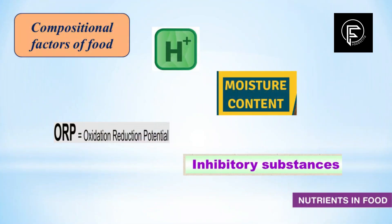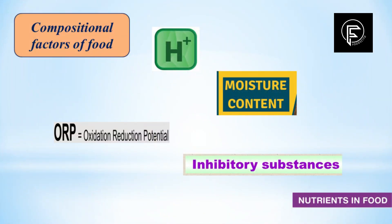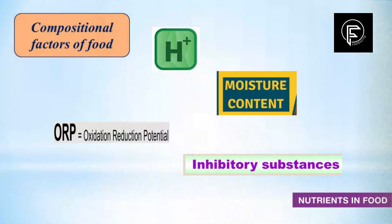What do we understand by compositional factors? As represented here, we have H+ ion concentration, which relates to the pH of the food. As we are all aware, some microbes grow well under acidic conditions while some grow well under alkaline conditions. We also have moisture content, which plays a crucial role — in general, food with higher moisture content allows growth of a range of microorganisms. In addition, we have oxidation-reduction potential.